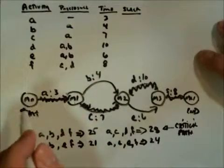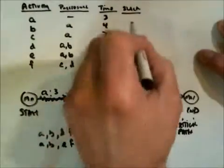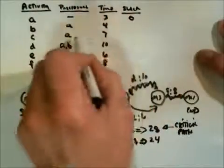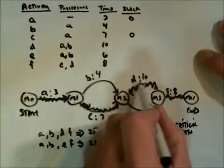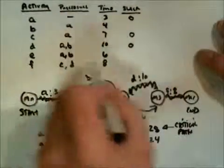Now, all the activities along the critical path have slack time 0. A has slack time 0, C has slack time 0, D has slack time 0, finally F has slack time 0.